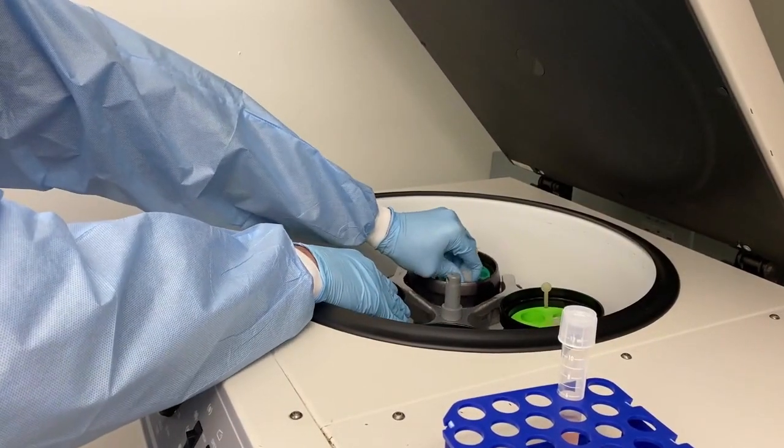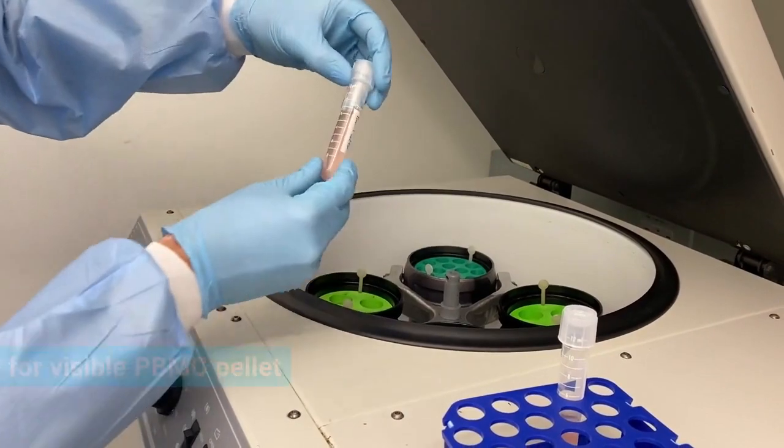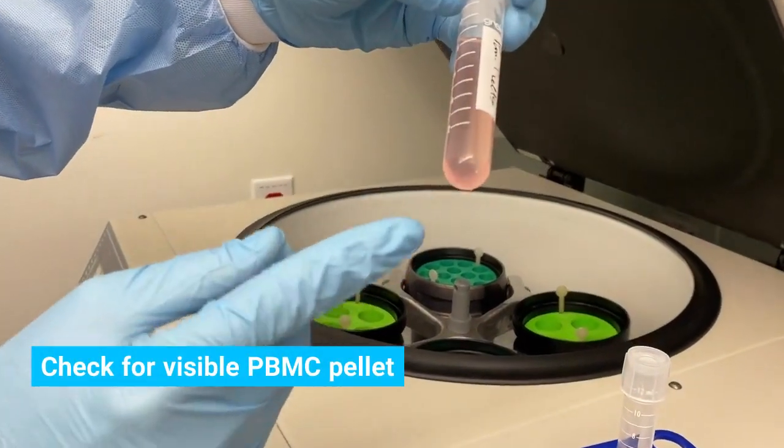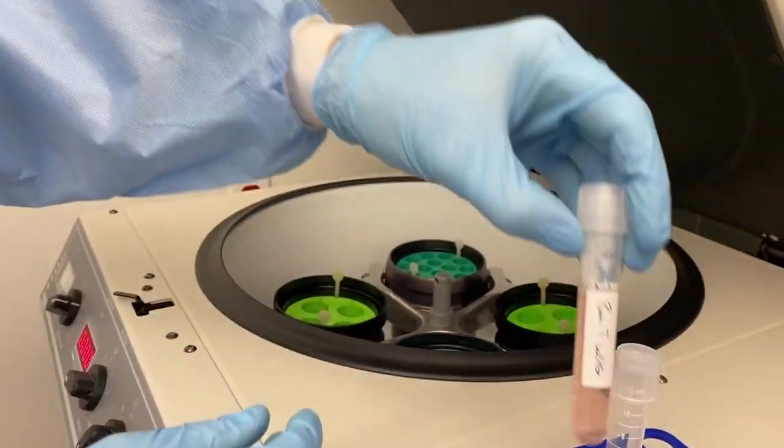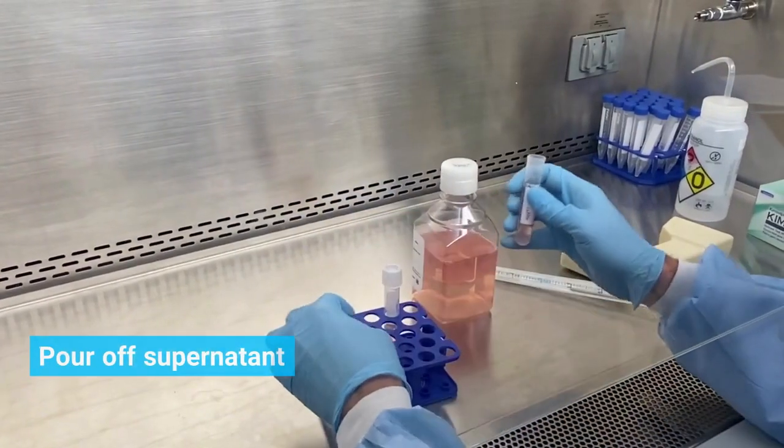When finished, a PBMC pellet should be visible at the bottom of the tube. Pour off the supernatant.